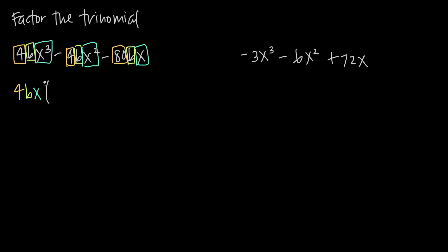When we take 4bx out of 4bx cubed, we took out the 4, and we took out the b, and we took out one factor of x. So that leaves us with just two factors of x to get back to x cubed, because x times x squared gets us back to x cubed — so that'll be x squared. And then for this term, we'll keep our minus sign. We took out the 4, we took out the b, and we took out one factor of x, which just leaves us with one more factor of x, because x times x gets us back to x squared. Then when we divide 80 by 4, we get 20, so we have to multiply 20 by 4 to get back to 80. We took out the b and the x, so negative 20 times 4bx gives us negative 80bx. So 4bx is going to be our greatest common factor, and now we just need to see if we can factor the remaining trinomial, x squared minus x minus 20.